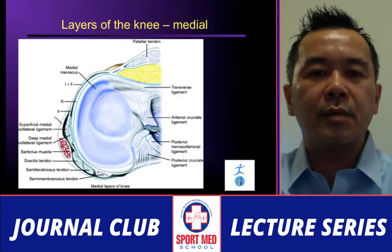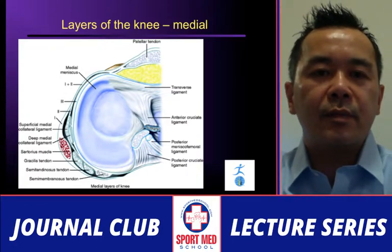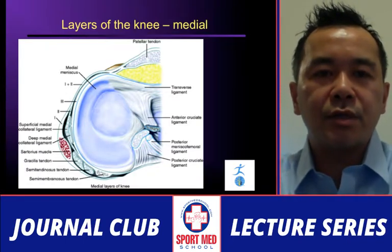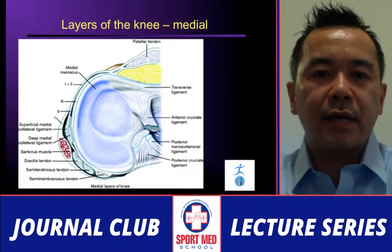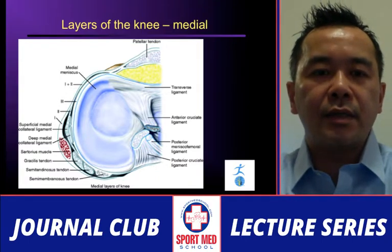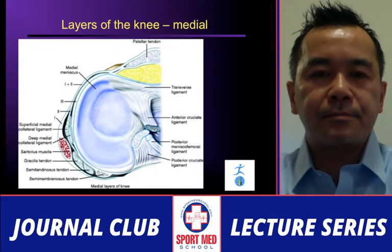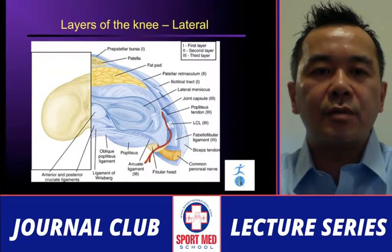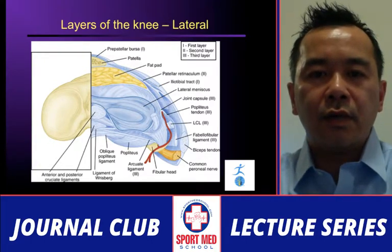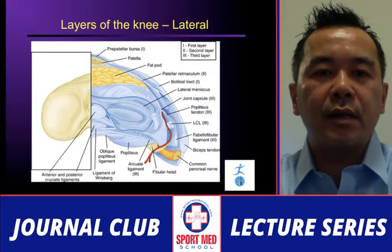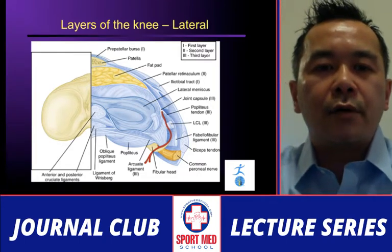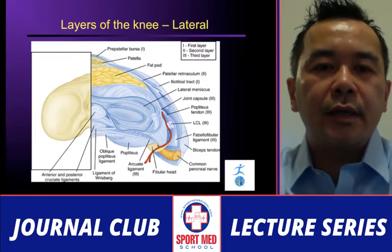When you approach the knee surgically, you address it through multiple layers on the medial and lateral sides. At the time of repair, you go through the same systematic process in terms of stabilizing the layers depending on which structure is injured. On the medial side, there are three layers from the MCL down to the capsule, as well as the MPFL on the second layer. On the lateral side, you go through every layer addressing the meniscus, LCL ligaments, and lateral retinaculum, correlated with MRI.